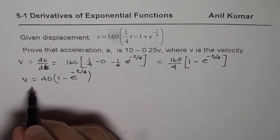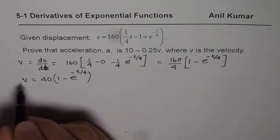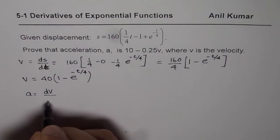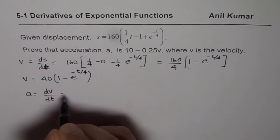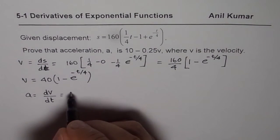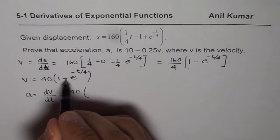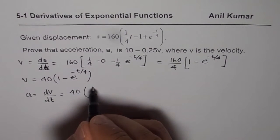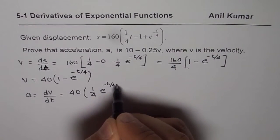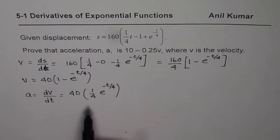Now what is acceleration? Acceleration is the derivative of velocity with respect to time, so we write a equals dv over dt. Differentiating, we get 40 times the derivative of that function: the two negatives cancel to give plus 1 over 4 times e to the power of minus t over 4. So acceleration a equals 10 times e to the power of minus t over 4.